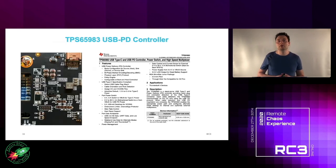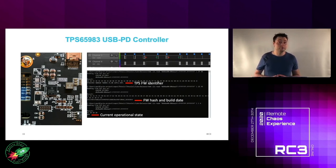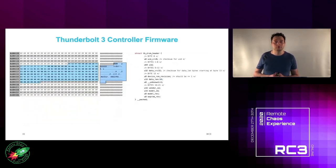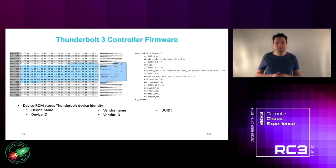The USB PD controller has a public data sheet, and you can talk to it over I2C to get firmware identifiers, current operational state, and there are registers to control output voltage. The SPI flash also has a public data sheet. We dumped its contents and found it stores the Thunderbolt 3 device controller firmware. When you dump this firmware, you'll immediately notice a section called the DROM — the device ROM — which stores all the device identity parameters including the UUID.